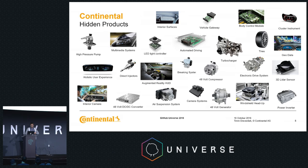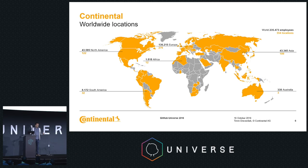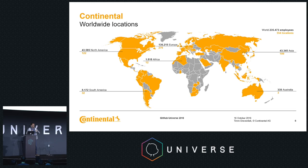The whole components we build are distributed worldwide. The company itself is spread around the world — roughly a quarter million employees at around 500 locations. We are number two for Tier 1 automotive suppliers, providing devices to OEMs who build cars from them. I'd bet that everybody here has used our products while driving a car.